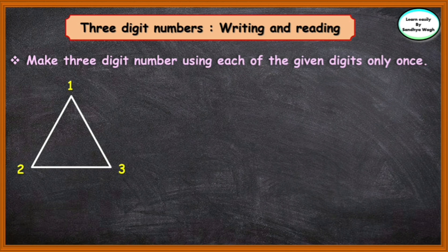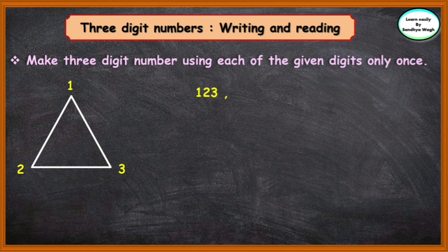Make three-digit numbers using each of the given digits only once. Here we have 1, 2, and 3. Let us make three-digit numbers from these digits. First, we will take 1 in hundreds place. So we can make 1, 2, 3 — that means 123. Then, let us interchange the tens place and the ones place, giving us 132.